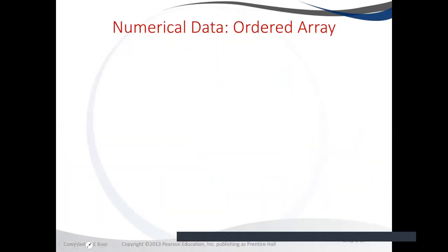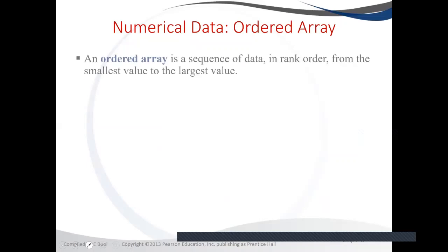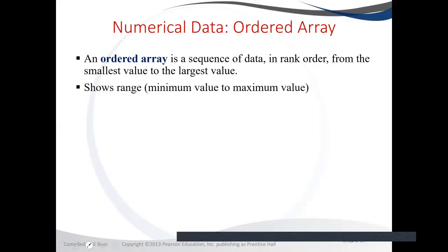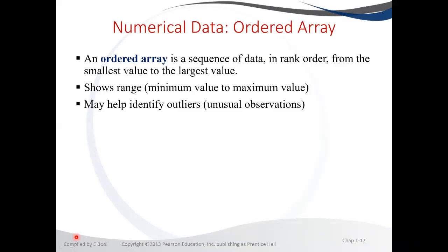An ordered array is how you arrange your data from the lowest value to your highest value. It is done by ranking the data, and using the ordered array we are able to show the range of your data by using the minimum value and your maximum value. It also helps with identifying unusual data — data that are outside of the norm, far away from the rest of the other data.